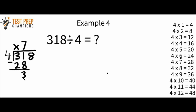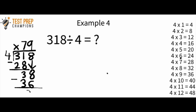Now I take that 8 along for the ride — I bring the 8 straight down, which leaves me with 38. The next question is: how many times does 4 go into 38? 4 goes into 38 nine times. 4 times 9 is 36. Now I do a subtraction: 38 minus 36 is just 2. The final answer is 79 remainder 2. The x is just here to help us remember how to line everything up — it does not appear in the final answer.